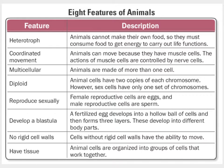Let's begin our discussion of the Kingdom Animalia by going over the eight features of animals — the eight characteristics that make them an animal. First, they are heterotrophs, meaning they can't make their own food so they have to ingest or consume food for energy. They also have coordinated movement — muscle cells governed by nerve cells. They are multicellular. They are diploid — two copies of each chromosome, one from each parent. They reproduce sexually. They develop a blastula, a hollow ball of cells that forms three layers and develops into the entire organism. They don't have any rigid cell walls, and they do have tissues — animal cells organized into groups that work together.